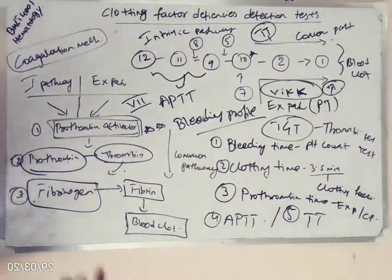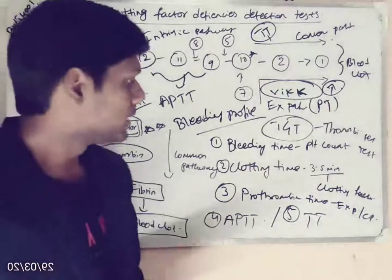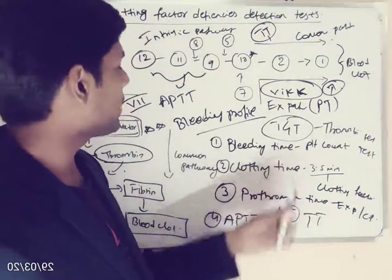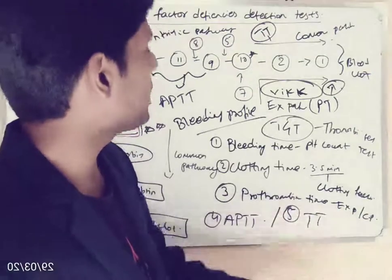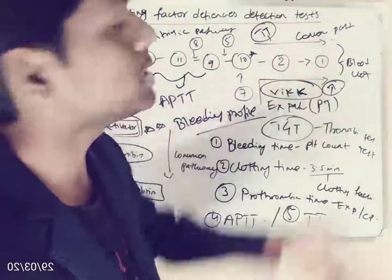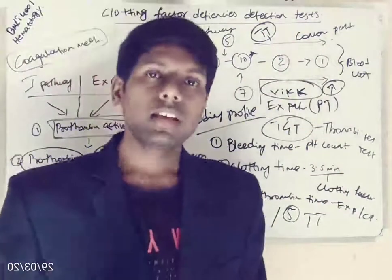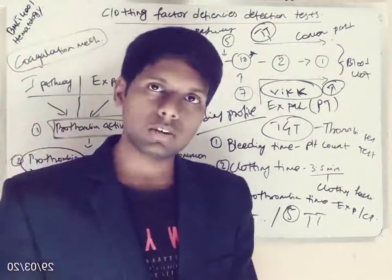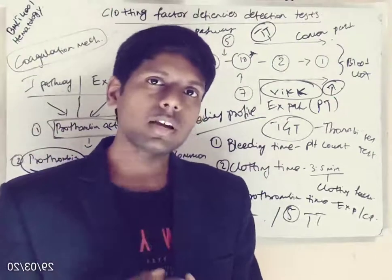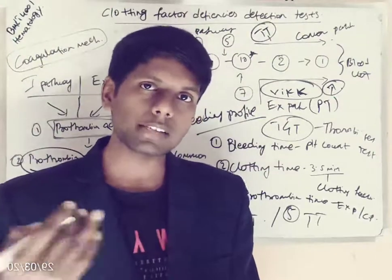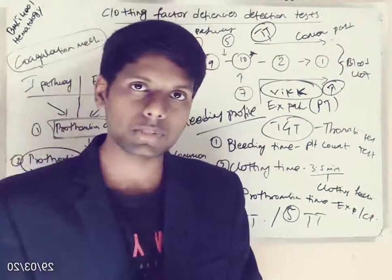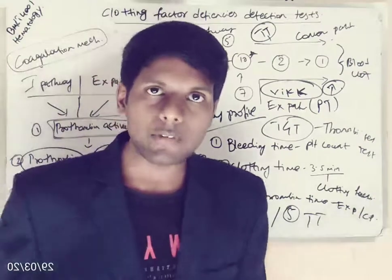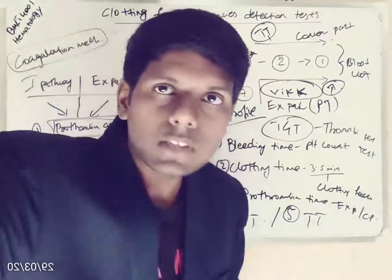These are the tests we perform to detect any clotting factor defects in the blood. How to perform bleeding time, clotting time, prothrombin time, activated partial thromboplastin time, thrombin time, and thrombin generation test — I will provide notes for you to go through. If you have any doubts, you can ask me in the classroom or text me in the comments. Thank you students, have a good day. See you in the next class.